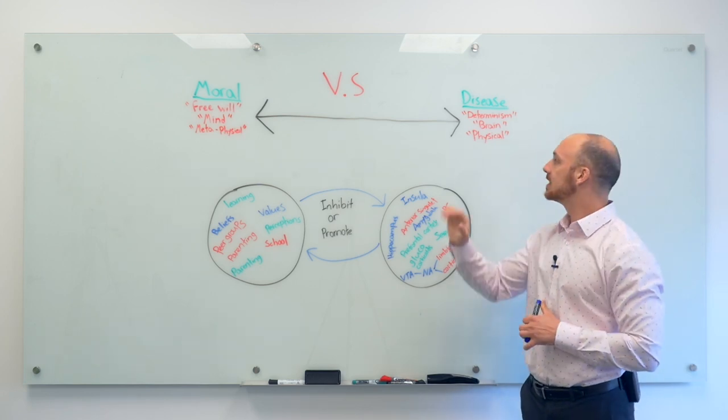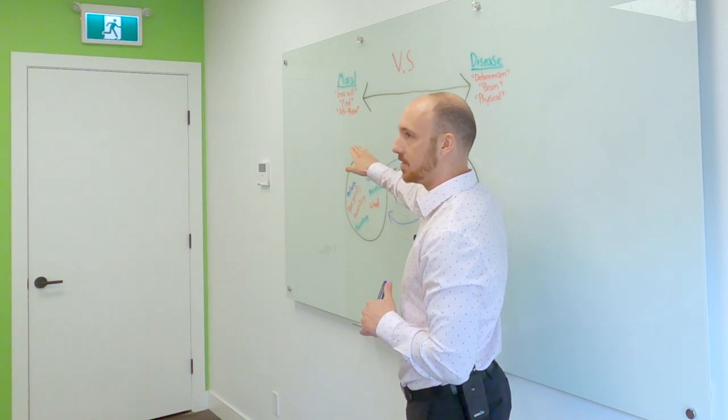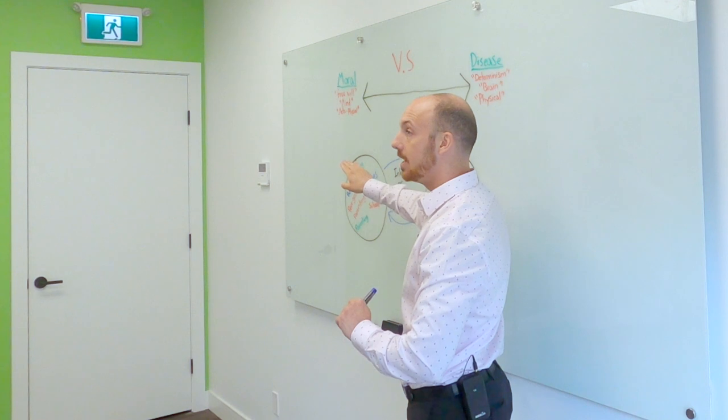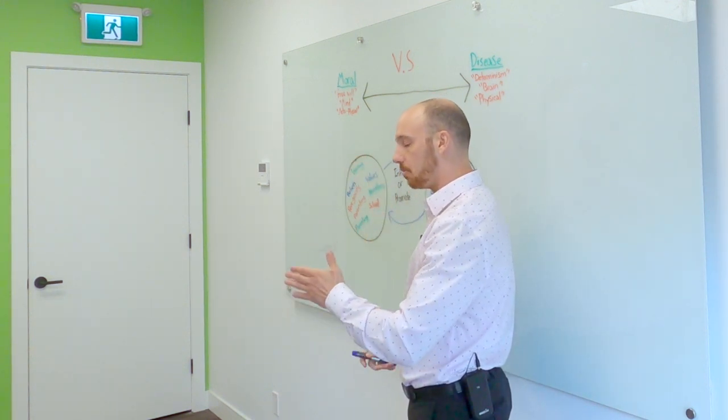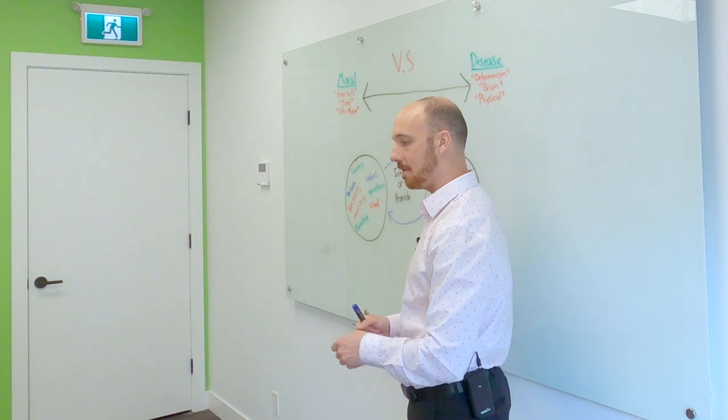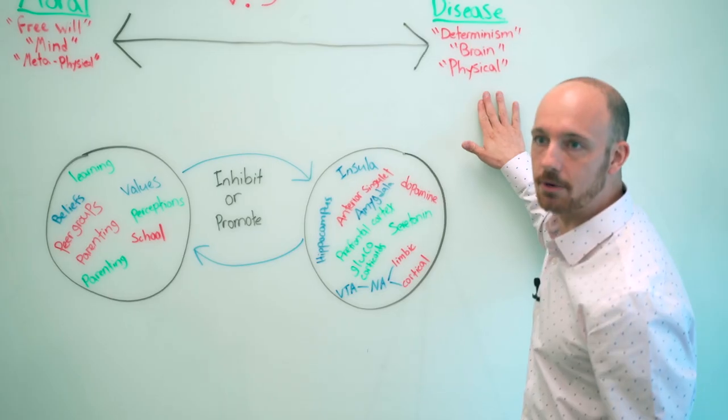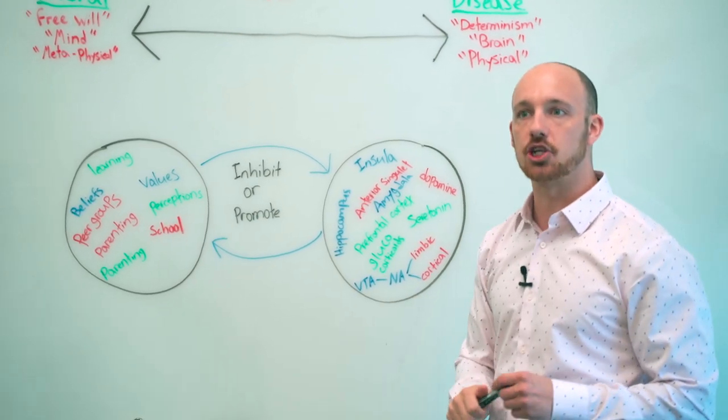You can tell if your ventral tegmental area and your nucleus accumbens forming either the mesolimbic or the mesocortical highway - the dopamine highway - is more robust and active in people. You can actually study this and it's directly observable. So because of that, science needs to study it. Science does not study metaphysical claims. That's for philosophy. Now philosophy is valid.